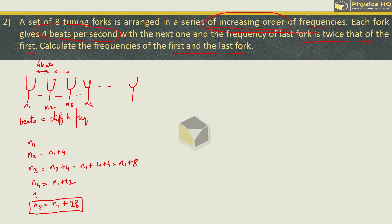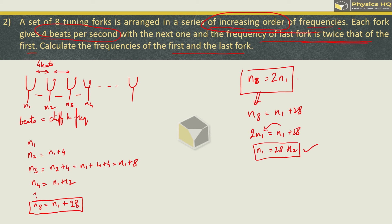What is the other equation? Frequency of last fork is twice of the first one. n8 is equal to 2 times n1. So n8 is equal to n1 plus 28. 2n1 is equal to n1 plus 28, so n1 is equal to 28 hertz. The first fork is equal to 28 hertz and the last fork is equal to 2 into 28, which is 56 hertz.